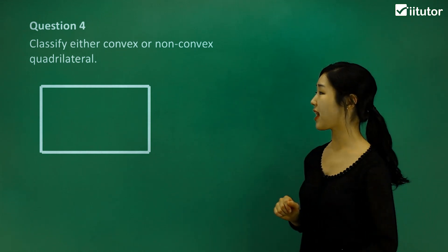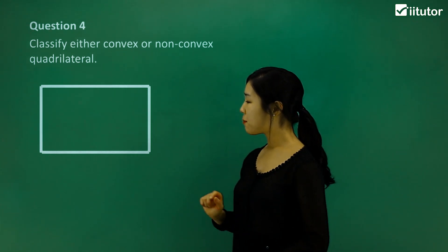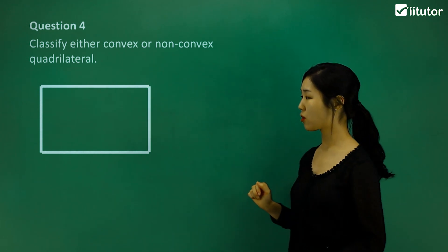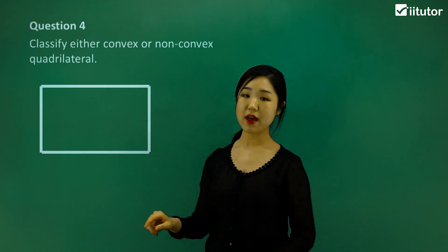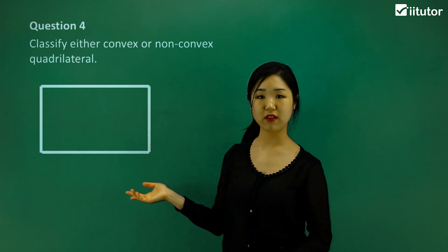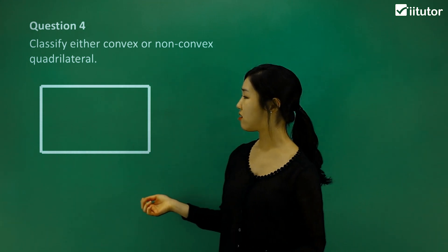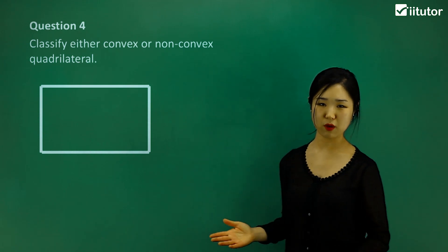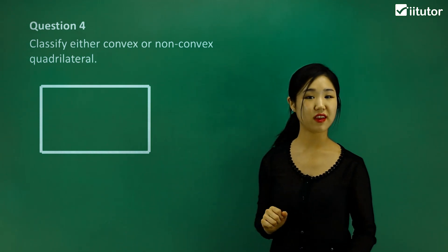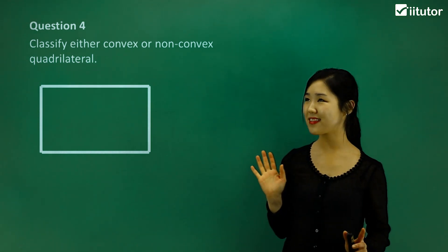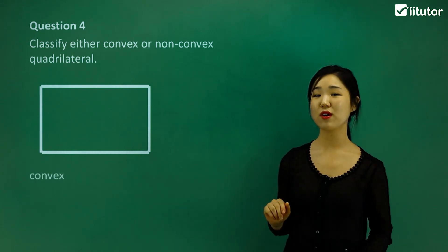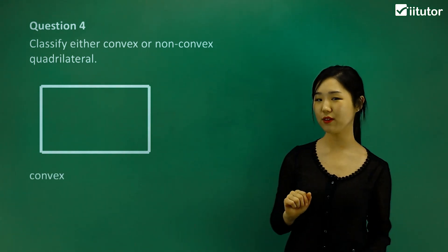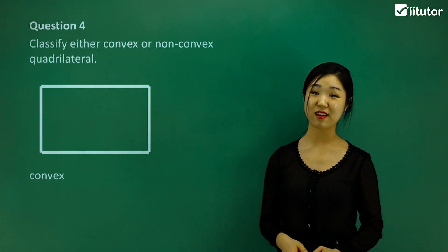Question four — let's classify this one. The vertices are all going towards the outside of the shape, and the diagonals are definitely within the shape. If you look at the angles, they look like right angles, but whatever they are, they're definitely less than 180 degrees. So this one must be convex. I think this is a regular rectangle, so it must be a convex quadrilateral.